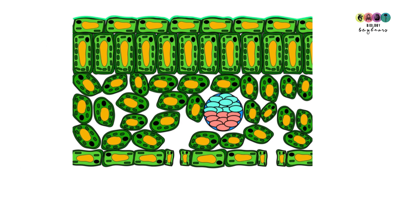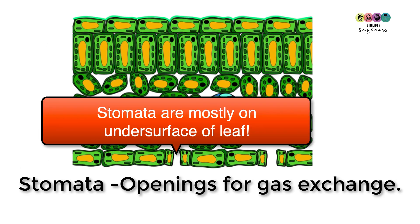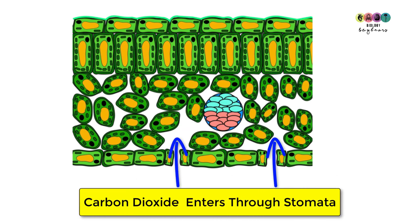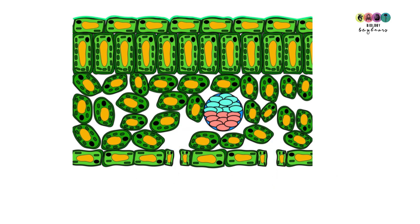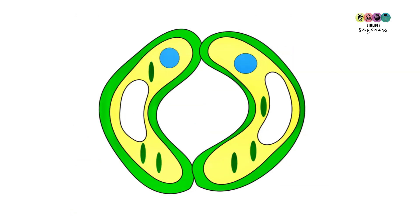Leaves have openings mostly found on the under surface, called stomata. Stomata are openings for gas exchange: carbon dioxide enters the leaf through the stomata, and oxygen and water vapour exit through them. On the under surface in particular there are many of these openings for gas exchange.